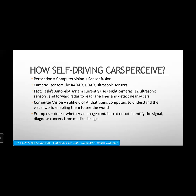Computer vision is a subfield of artificial intelligence that trains computers to understand the visual world, enabling them to see and make decisions. Through AI, we train computers to understand the visual world — for example, to detect whether an image contains a cat, identify traffic signals, or diagnose cancers from medical images. Without vision, self-driving cars will not be able to proceed.